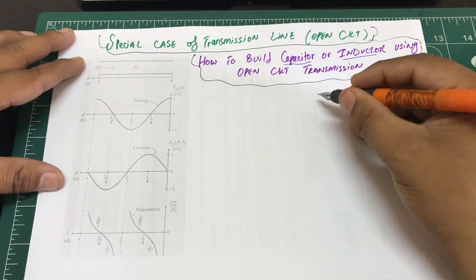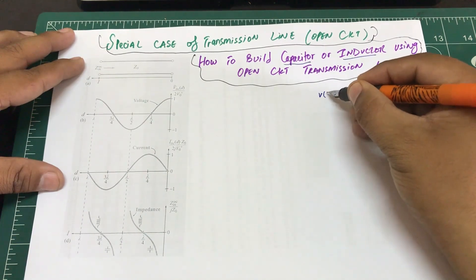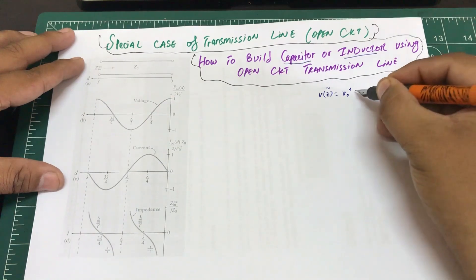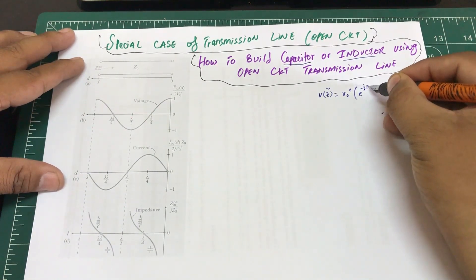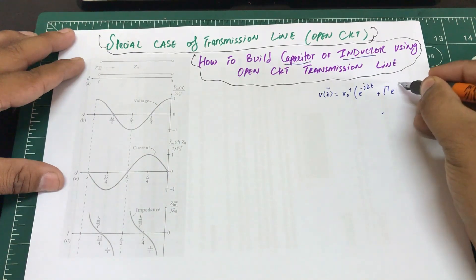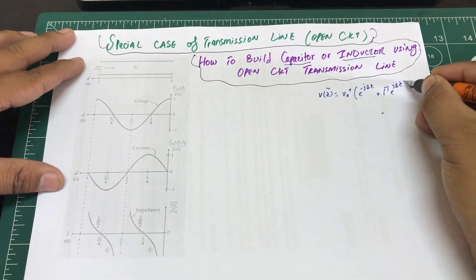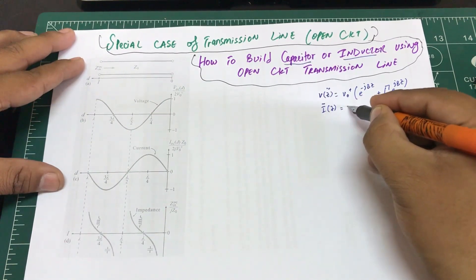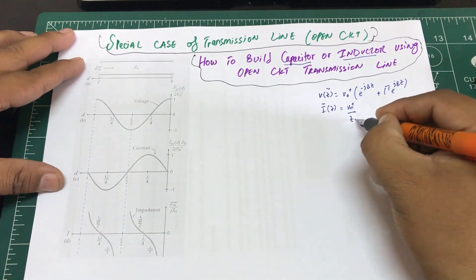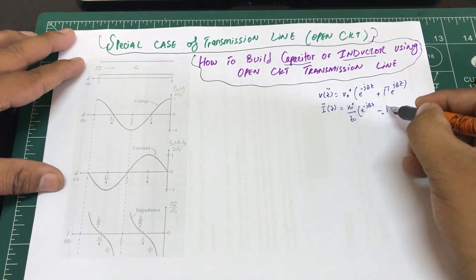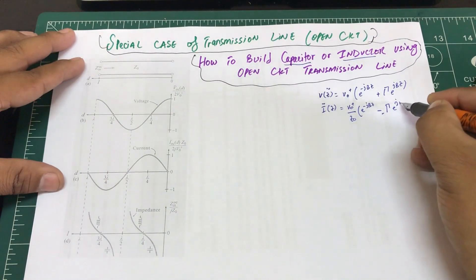We're going to start with our definitions: V(z) = V₀⁺e^(-jβz) + Γe^(jβz), and I(z) = (V₀⁺/Z₀)e^(-jβz) - Γe^(jβz).